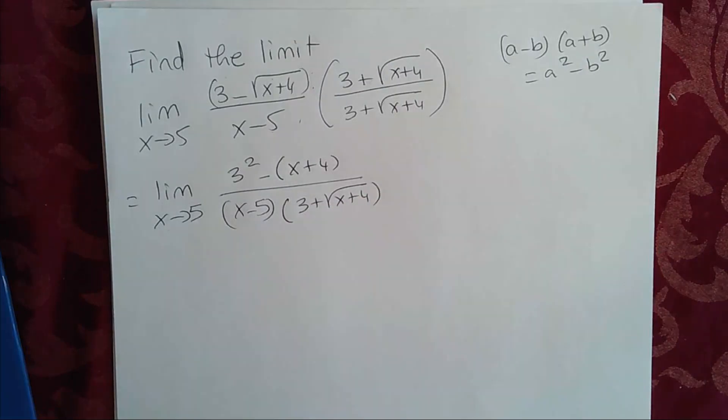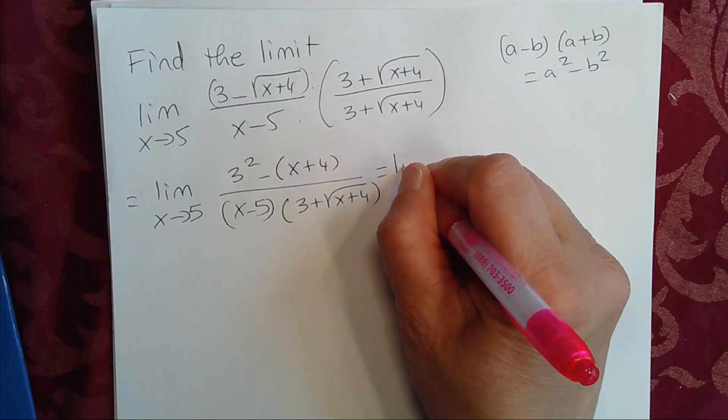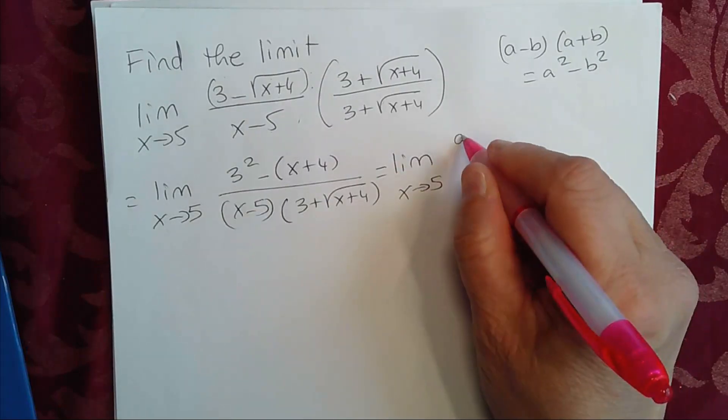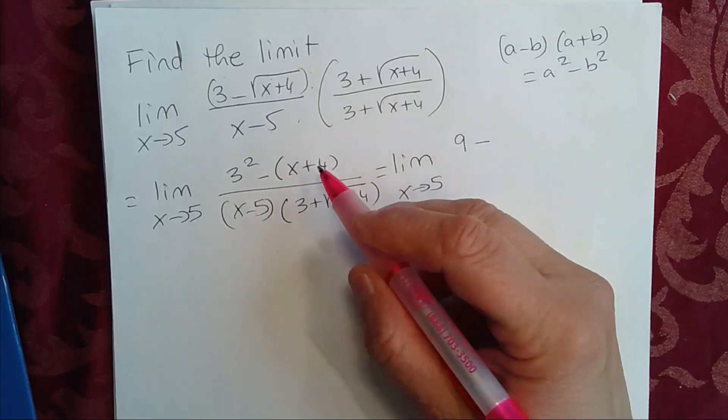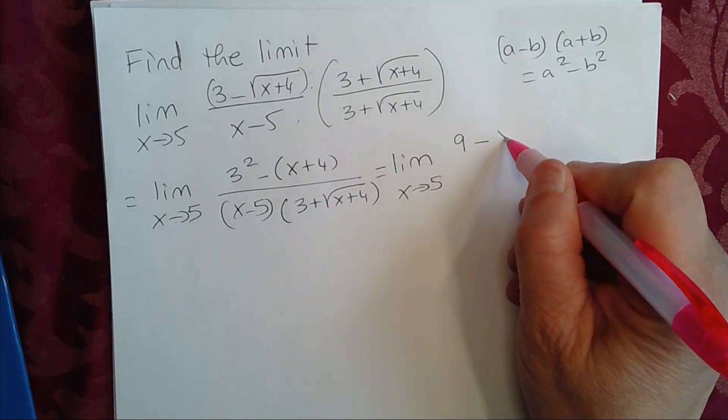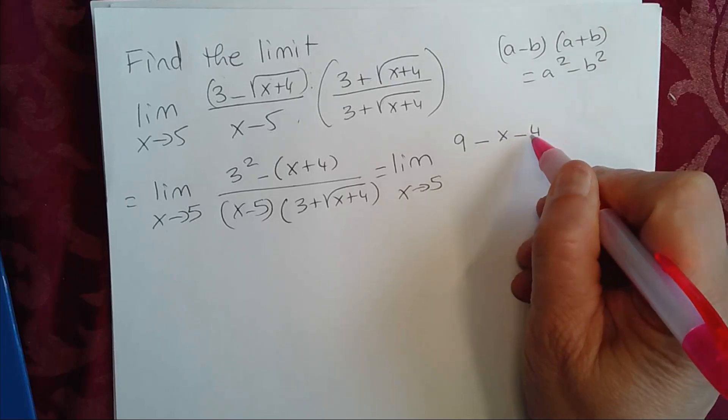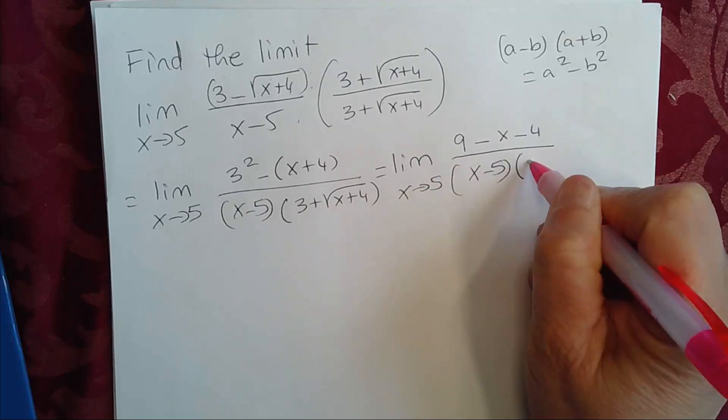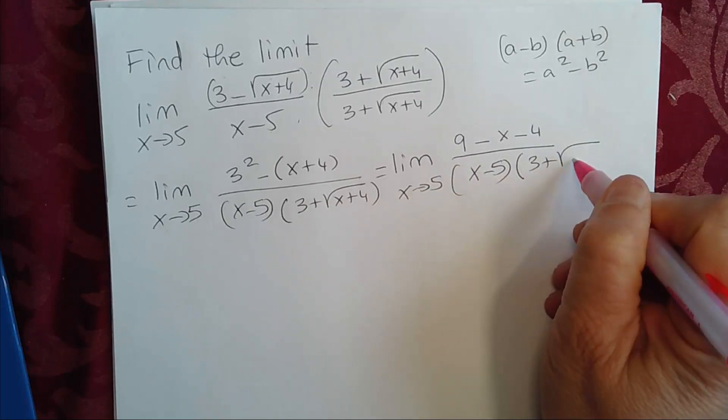So this gives us the limit as x approaches 5. 3 squared is 9 minus, you can distribute the negative if you like, so negative x minus 4 divided by x minus 5 times 3 plus square root of x plus 4.